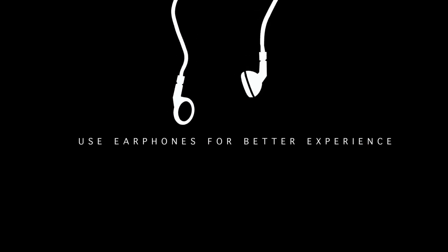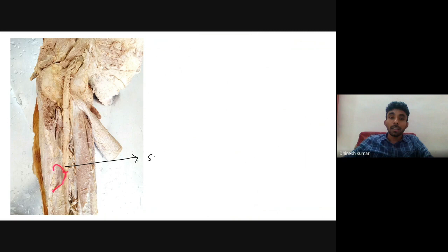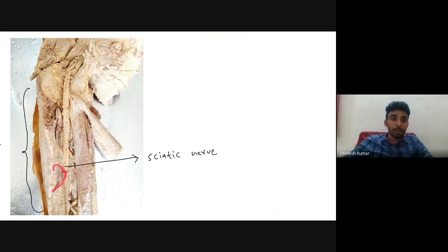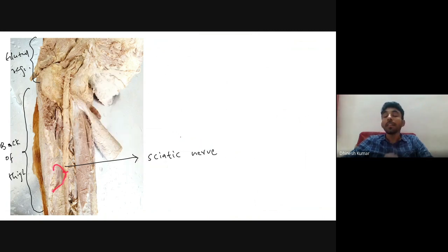Let's go to the first question. Can you please try to identify the tied structure? This is the sciatic nerve — the sciatic nerve has been tied. I hope you have the orientation: this is the back of thigh and this is the gluteal region. At the back of thigh we have the thickest nerve in the body, which is the sciatic nerve.